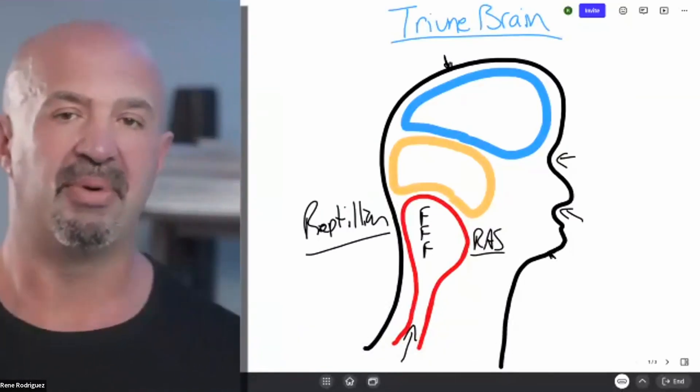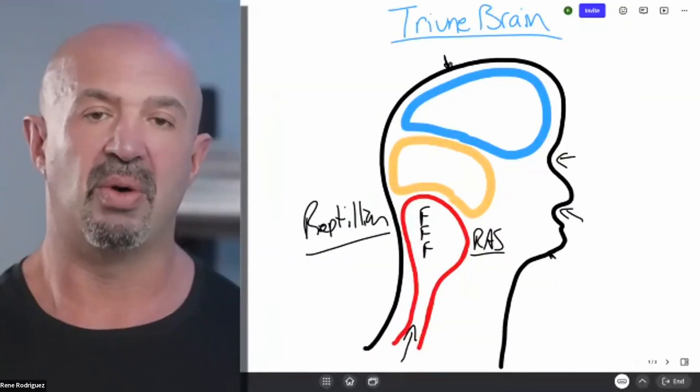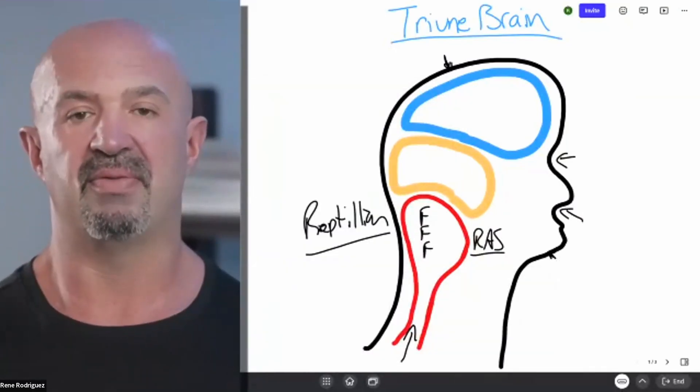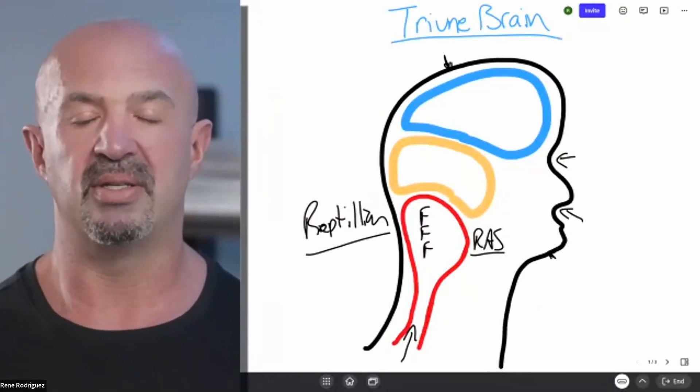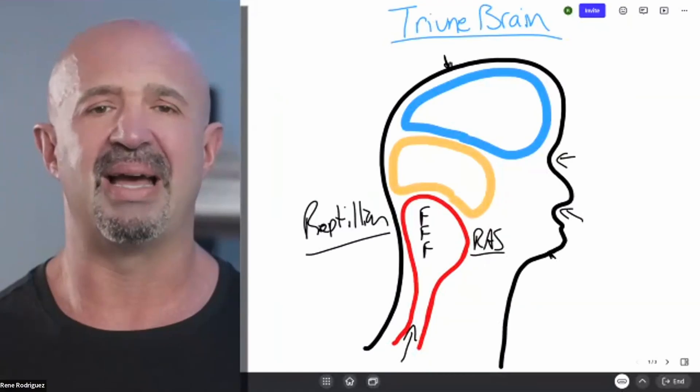The way that it measures that is through this thing called the reticular activating system. I write in detail about this in my book. The reticular activating system, or the RAS, is really a radar, and it really determines what we pay attention to.